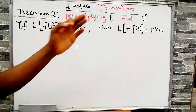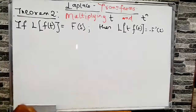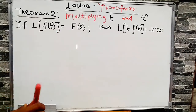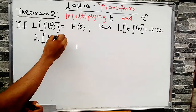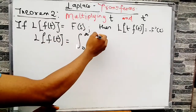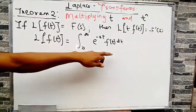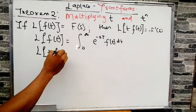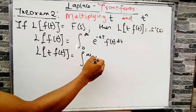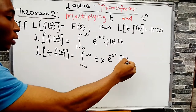Considering our second theorem: if the Laplace of f(t) equals F(s), then the Laplace of t times f(t) equals the negative of the first derivative of F(s). To prove this, we know the Laplace of f(t) is the integral from 0 to infinity of e^(-st) f(t) dt. So the Laplace of t·f(t) equals the integral from 0 to infinity of t·e^(-st)·f(t) dt.